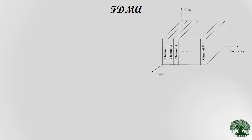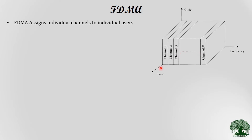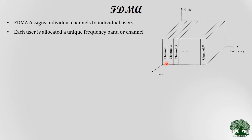FDMA assigns an individual channel to each individual user. For example, User 1 uses Channel 1, User 2 uses Channel 2, User 3 uses Channel 3, and so on. Each user is allocated a unique frequency band or channel. Importantly, each channel has a unique frequency and no frequencies are repeated — channels are assigned on demand by users from the base station.